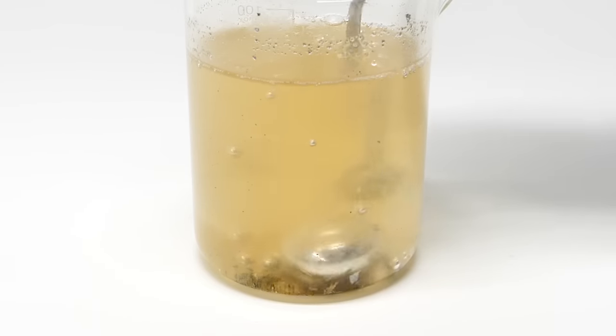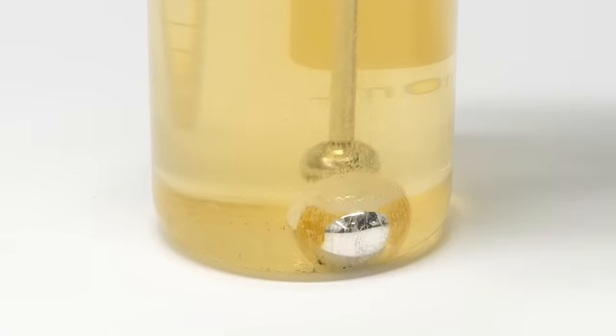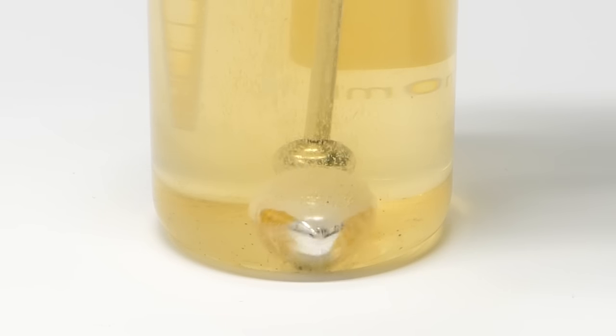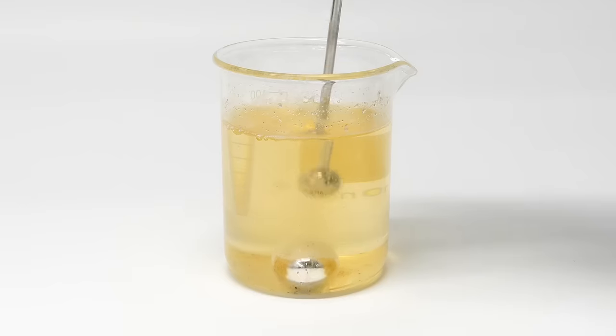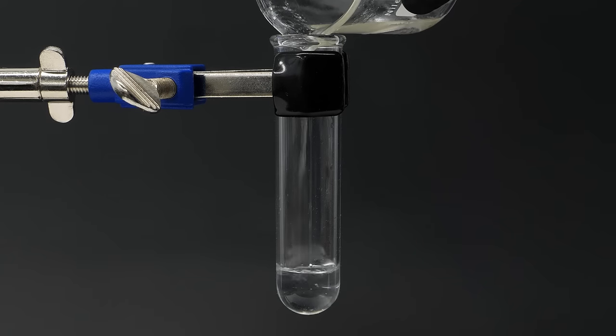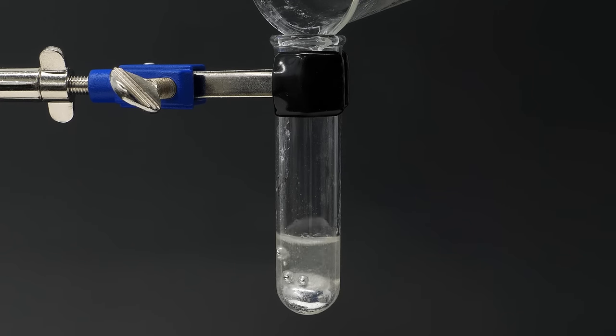I then stirred this around for another couple minutes, and I eventually had a perfect ball. I poured off almost all of this dirty yellow kerosene and I transferred it to a test tube with some fresh kerosene.